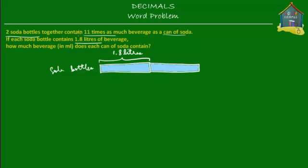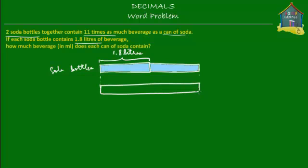Two soda bottles together contain 11 times as much beverage as a can of soda. What this means is that if you take these two soda bottles and empty them into a pitcher, then use that beverage to fill up cans of soda, you'll be able to fill 11 cans of soda. So 2 times 1.8 liters can fill 11 cans of soda. This whole block can be distributed into 11 cans of soda.